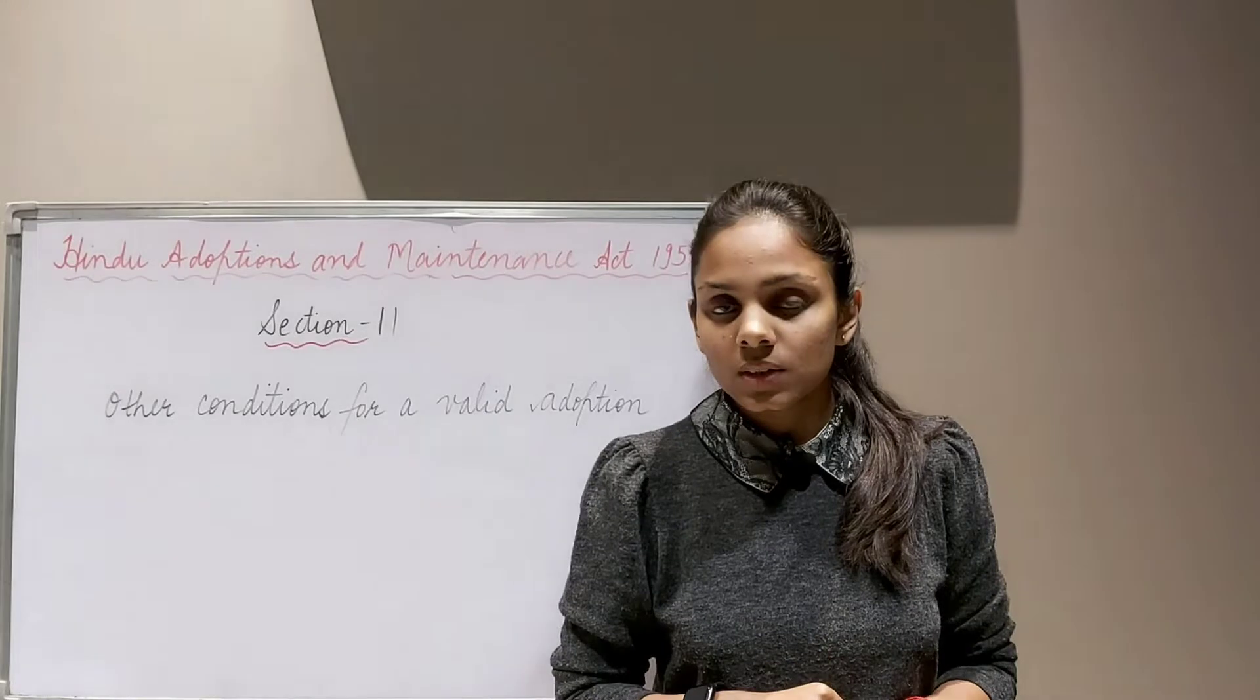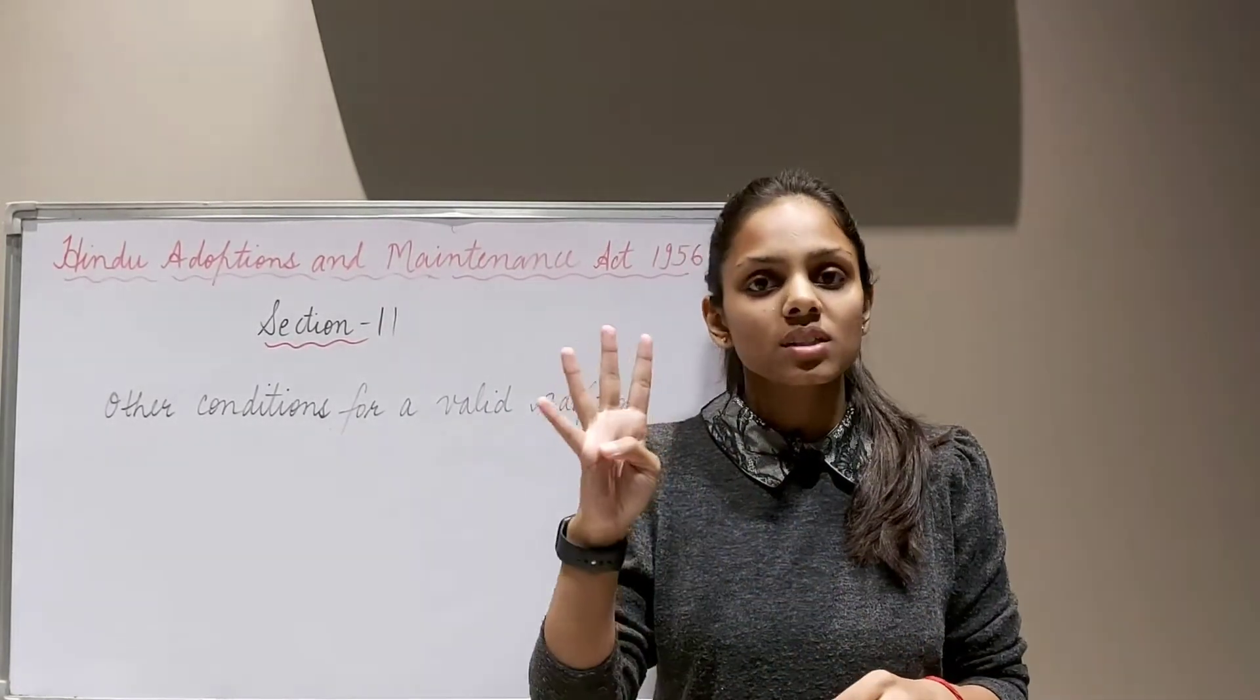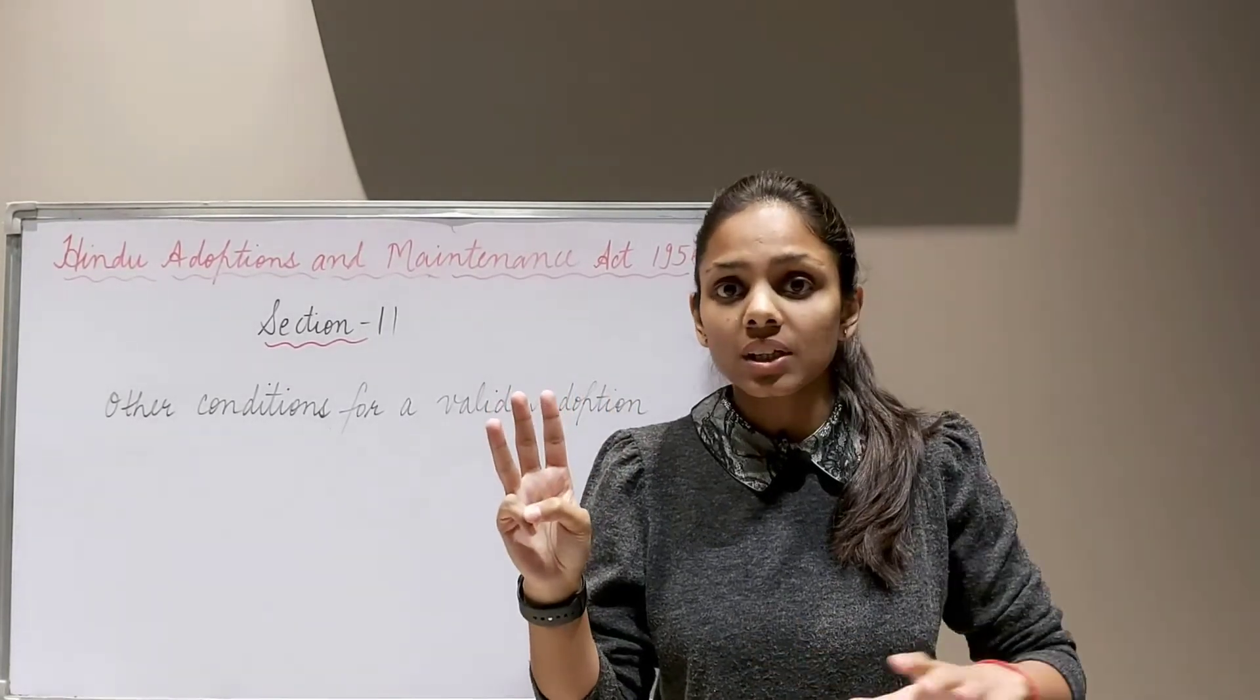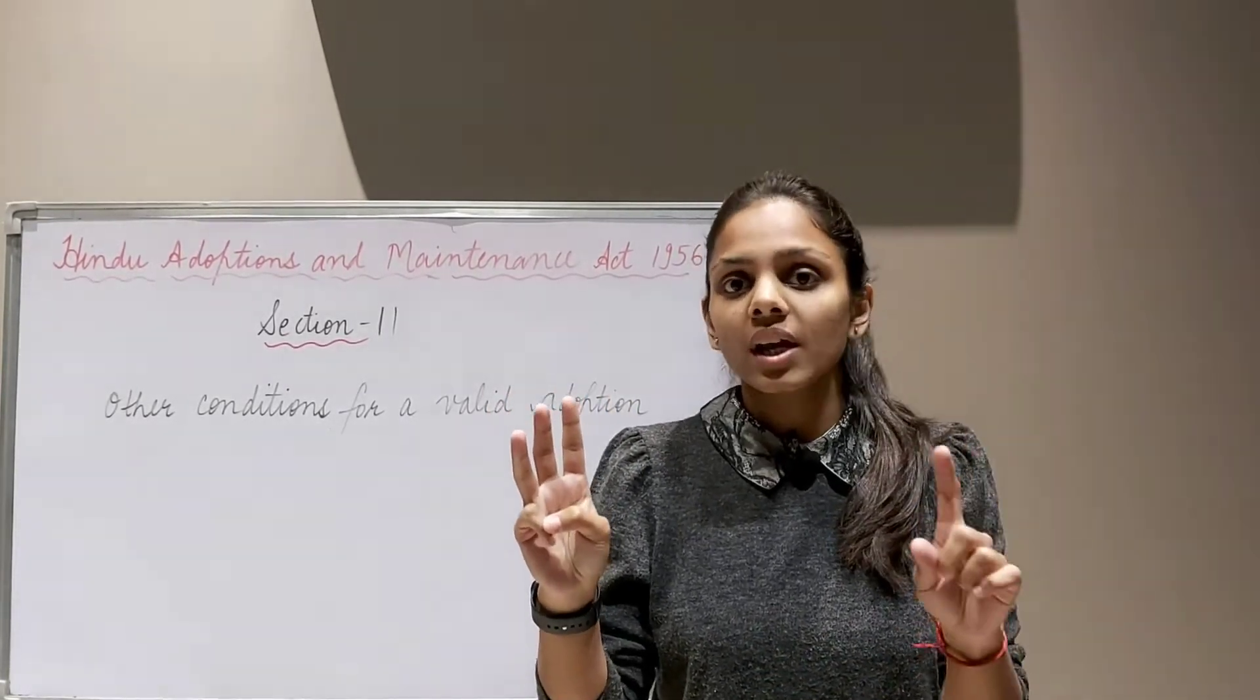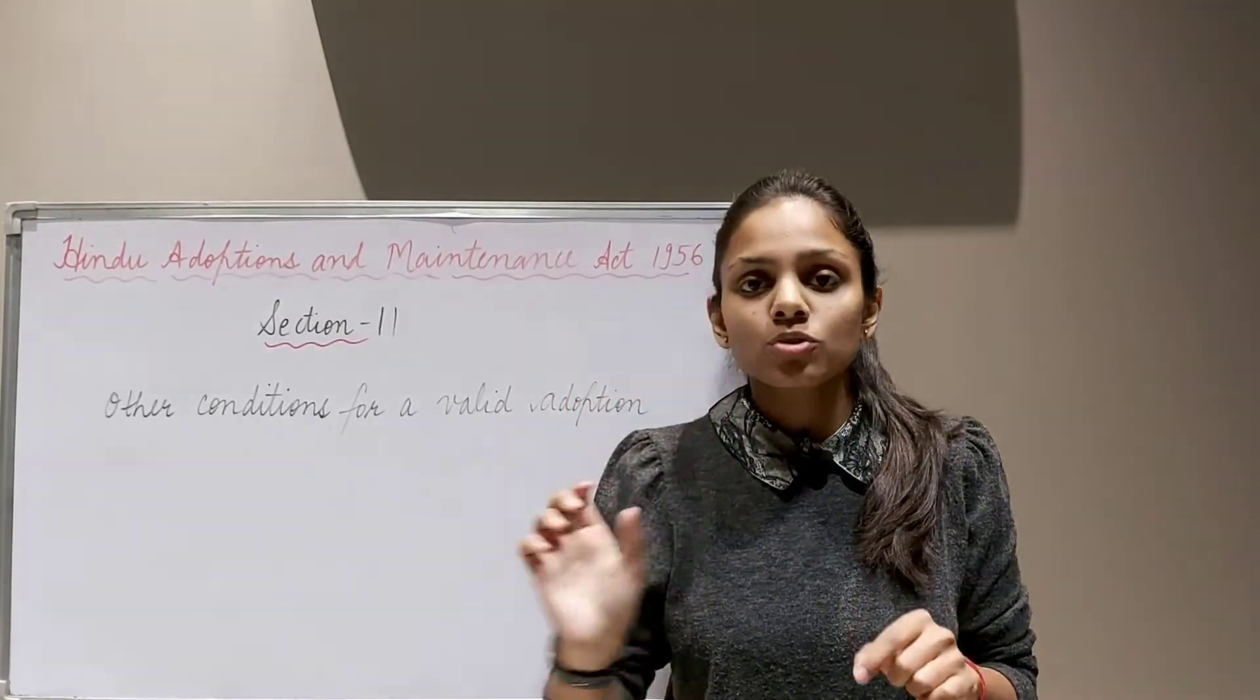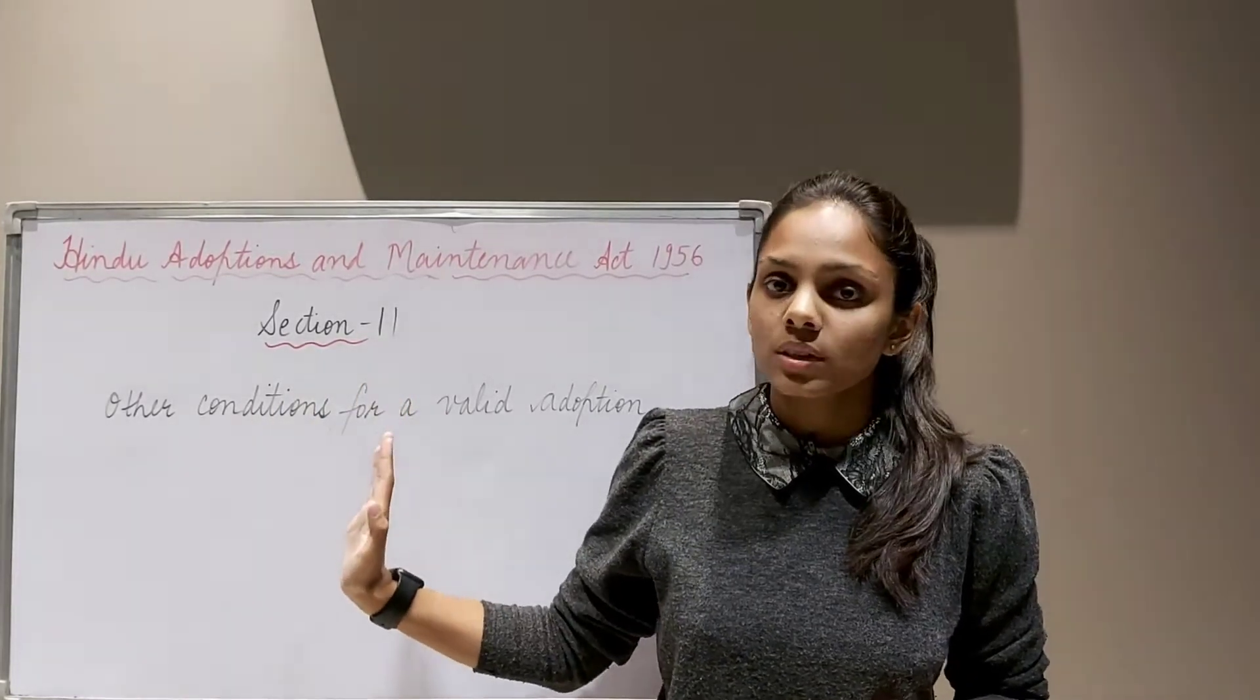We have discussed under section 6 that there are certain essentials for an adoption to be valid. Section 6 has four clauses, and clauses 1, 2 and 3 have been discussed by me in greater detail under sections 7, 8, 9 and 10. Section 6 clause 4 gives us reference to section 11. This section is also a continuation of section 6.